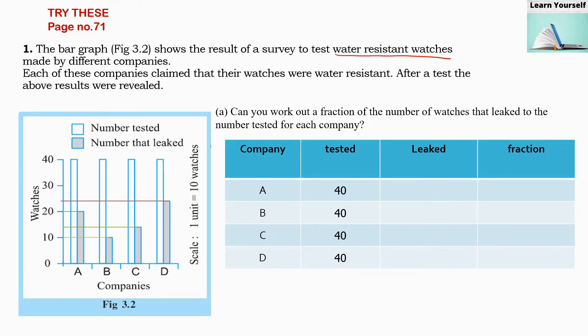Now what is the meaning of water resistant watches? It means even if you put it into water it will still work. That means it is water resistant — it resists the water and will still function even if you wear it under water.